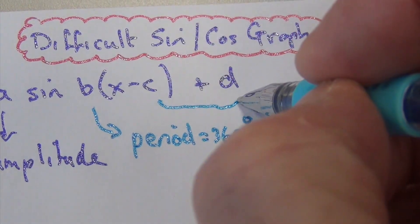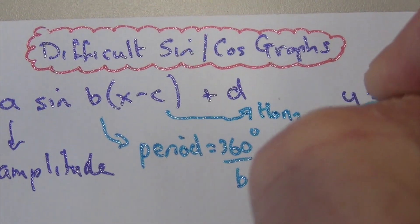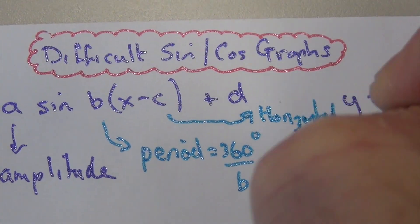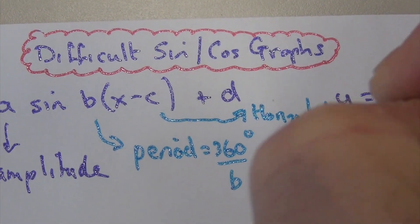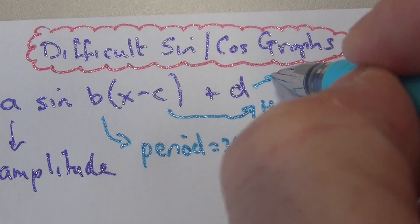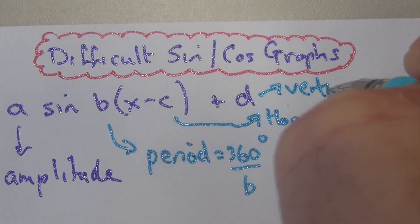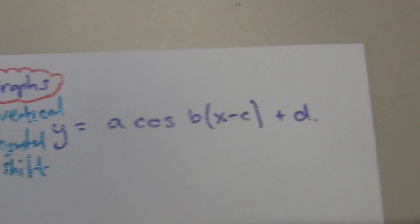This one is our horizontal shift. And the D here is the vertical shift. So it's all a bit tight there.